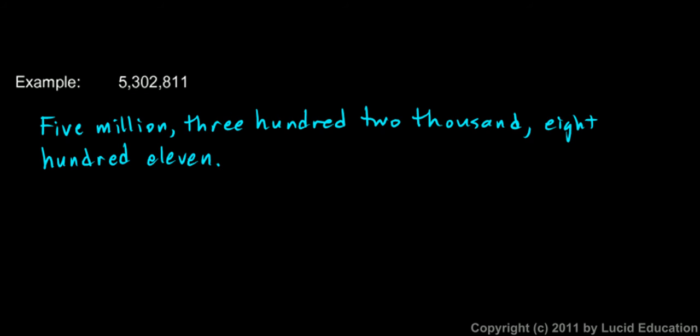5 million, 302 thousand, 811. And we write 5 million, we write 302 thousand. But we don't say 811 ones. We don't write the name of the ones group at the end.